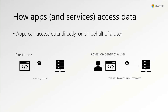The other form of access is access on behalf of a user — we have a user involved and also an application. The client application takes action at the resource on behalf of that user. If you notice the pentagons representing the token: for direct access, the token identifies the application as the subject, whereas for access on behalf of a user, it identifies the user as the subject. That will be an important point in the next few slides.